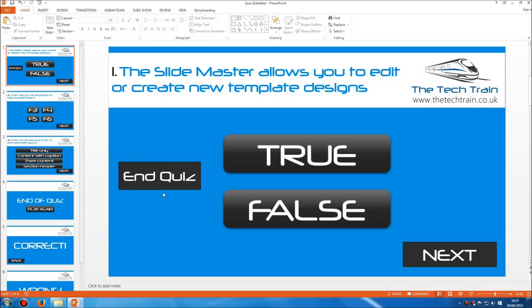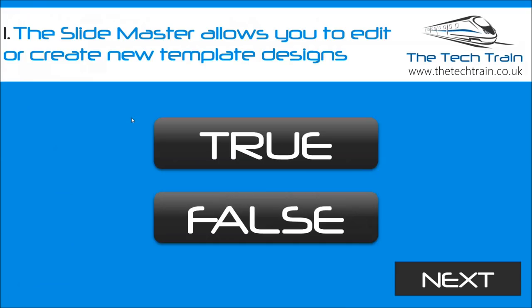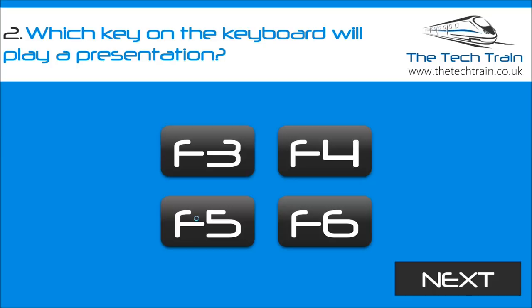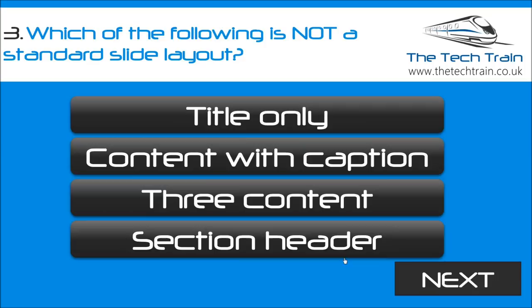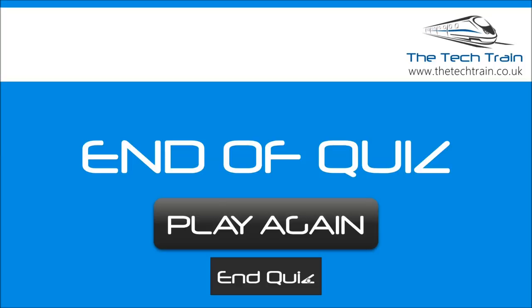I'm going to cut that and paste it into the end of quiz slide. Let's test this — hit F5. We know true is correct, then F5 is correct on question two, then three content is correct on question three. Click on next — there we are, end of quiz. So that next button takes us to the next slide each time whatever order they're in. Here's the end quiz button, which ends the quiz.